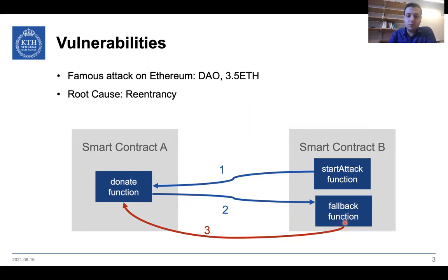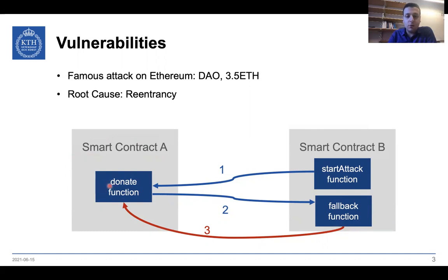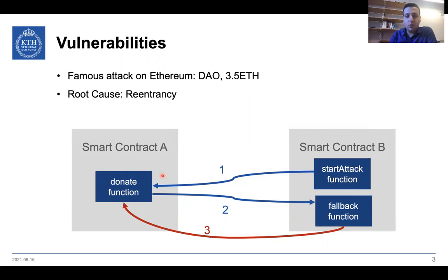The fallback function recursively again calls the donate function. And if smart contract A does not contain enough proper checks in its code, something bad may happen. This can happen until smart contract A drains out of Ether or maybe the transaction gets reverted.